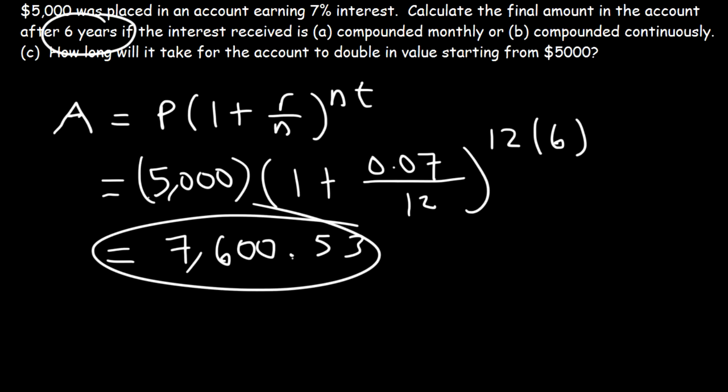Now what about part B? Compounded continuously. How much money will be in the account if it's compounded continuously? You need to use a different equation. A is equal to PE raised to the RT. P is 5,000. R is 0.07. And T is 6.